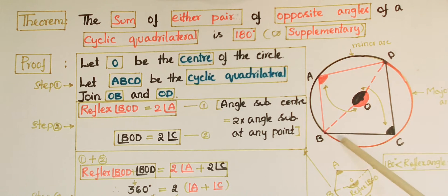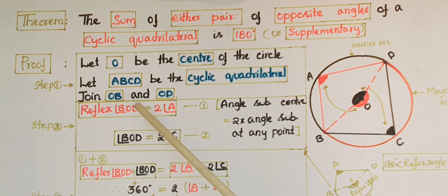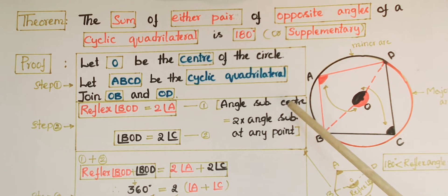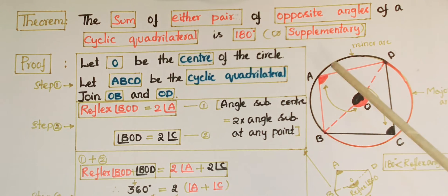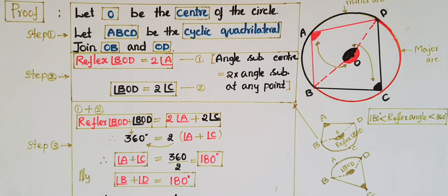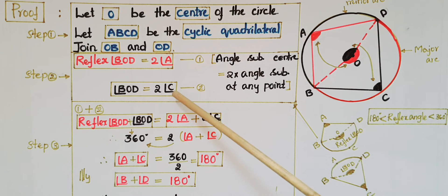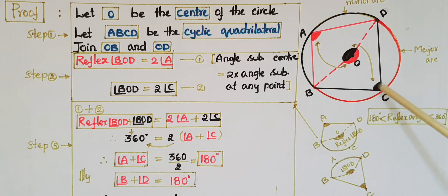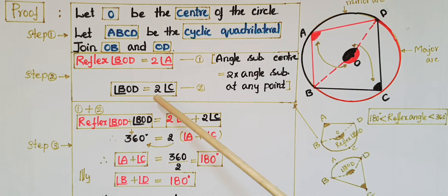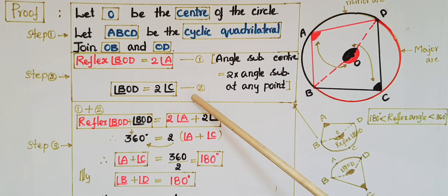Reflex angle BOD is equal to twice the angle subtended at any point of this arc, so reflex angle BOD equals two times angle A, where angle A is the angle subtended by major arc BCD at point A. This is the first equation. Now the angle subtended by the minor arc BAD at the center is angle BOD, so angle BOD is equal to two times angle C. This is the second equation.